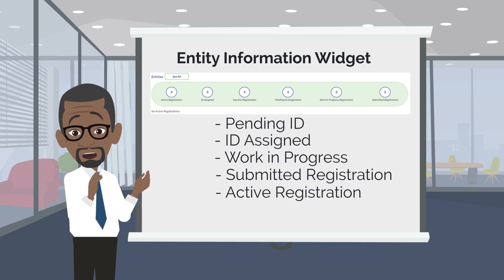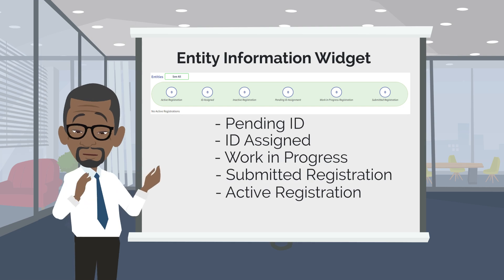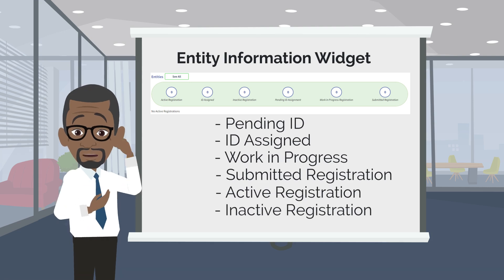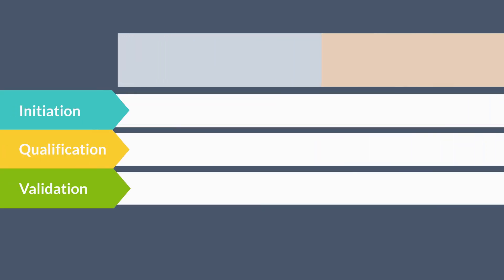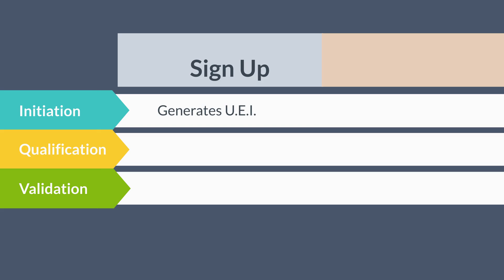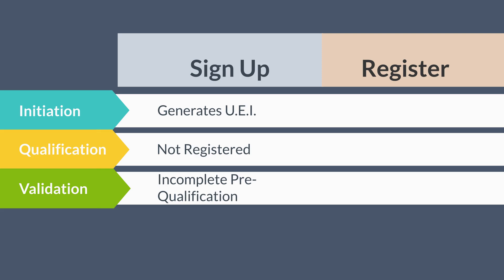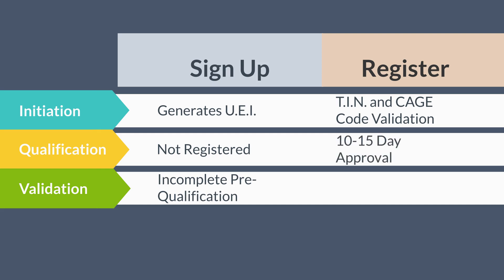Registrations in SAM.gov are good for 365 days. If the registration were to expire, a 1 would populate in the inactive registration circle. As part of the pre-qualification process, you will complete the following steps. Step 1: Sign up in SAM.gov and obtain a unique entity identifier. Entities with a UEI but unregistered are not pre-qualified or able to do business with the federal government. Step 2: Complete the registration of your entity. Registering validates or assigns a CAGE code if your entity does not already have one. Registration activation typically takes 10 to 15 business days, and your approval will come in the form of an email. Notification of discrepancies or concerns will also occur via email.